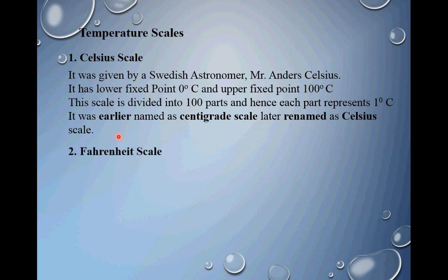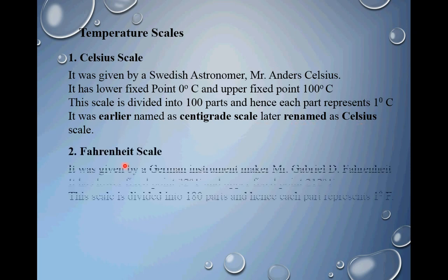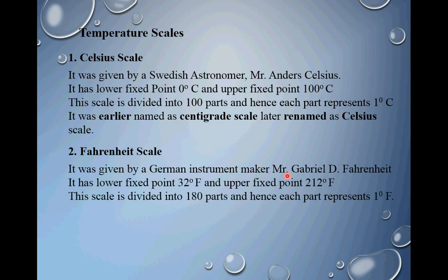Another two-point scale is the Fahrenheit scale, given by German instrument maker Mr. Gabriel D. Fahrenheit — the same person who gave the thermometer as an instrument for the first time. This scale also has two points: the lower fixed point, 32 degree Fahrenheit, and the upper fixed point, 212 degree Fahrenheit. From 32 to 212 degree Fahrenheit, you have 180 parts, so this scale is divided into 180 parts and each part represents 1 degree Fahrenheit.